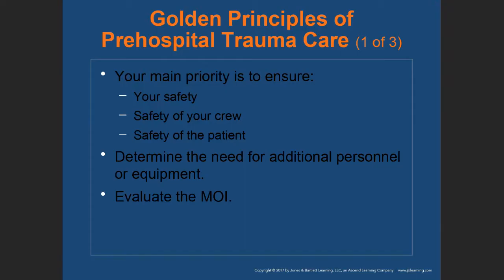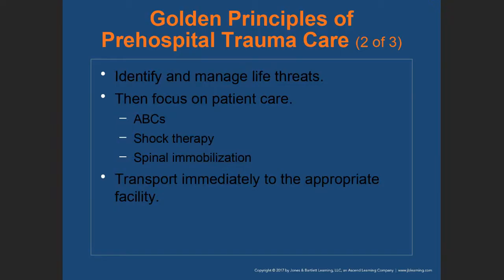The golden principles of pre-hospital trauma care: your main priority is to ensure your own safety, then your crew's safety, then the patient's safety. Determine the need for additional personnel or equipment. Evaluate the MOI and identify your index of suspicion. Identify and manage life threats, then focus on the patient's ABCs. For trauma, look for excessive bleeding early — before making contact, as you approach a patient, look for signs of external bleeding. You must address that first, then perform your ABCs.